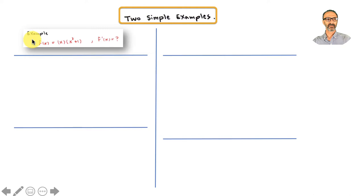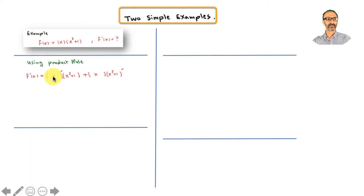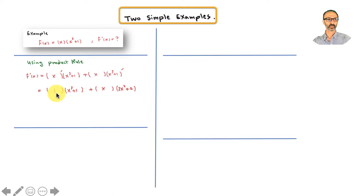Let's start with two simple examples. Example number one: f of x equals x multiplied by x cubed plus 1. We need f prime using the product rule. Think of x as f and x cubed plus 1 as g. Set up the pattern: f·g, f·g — once you put the tick mark on one, you switch.